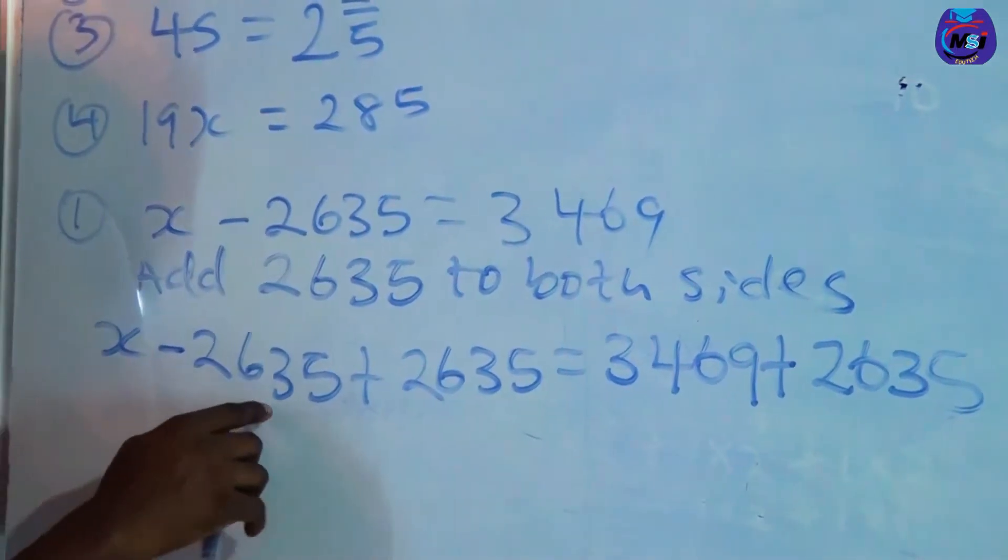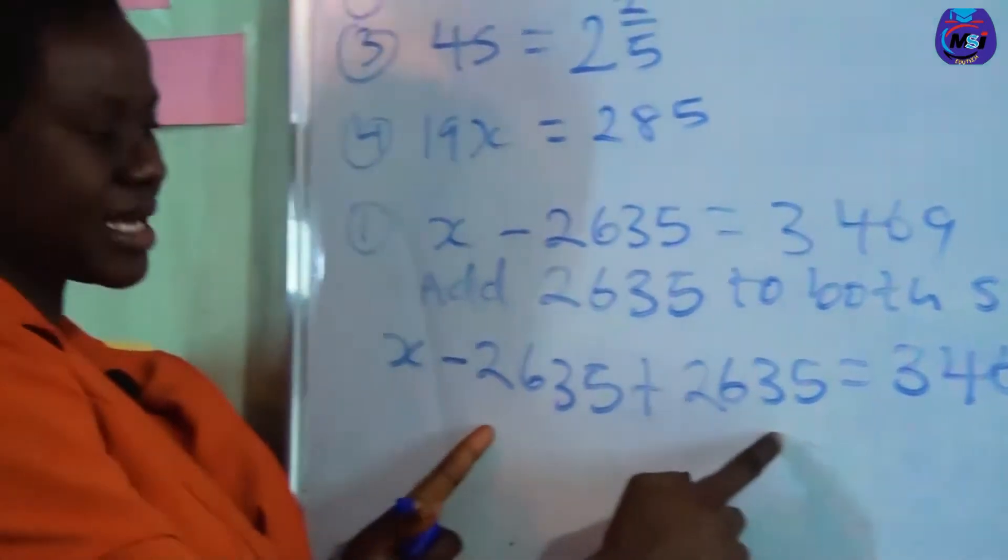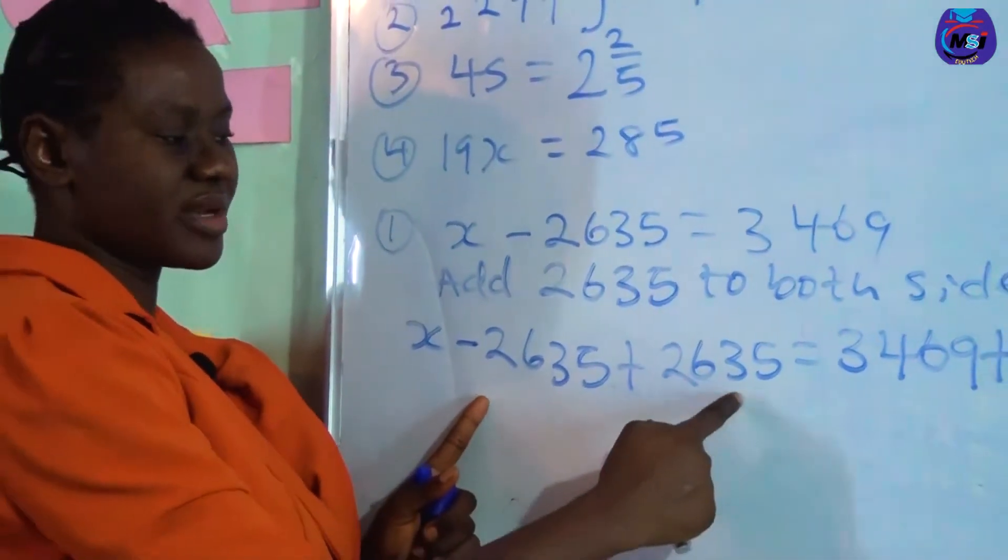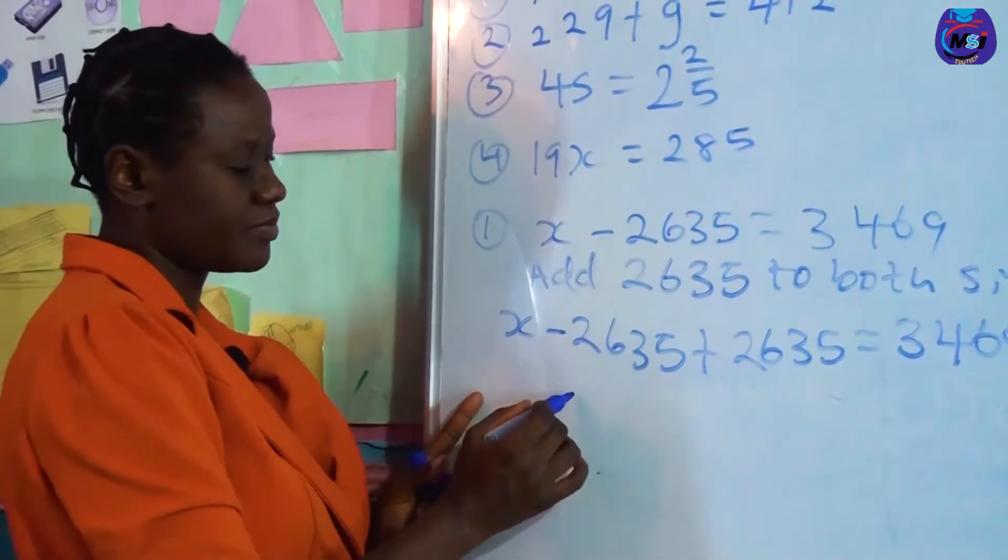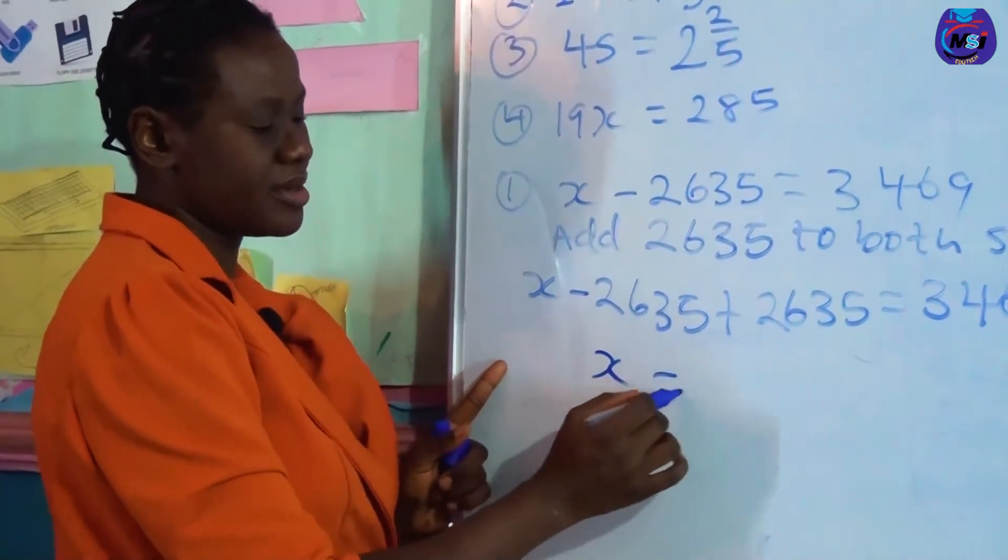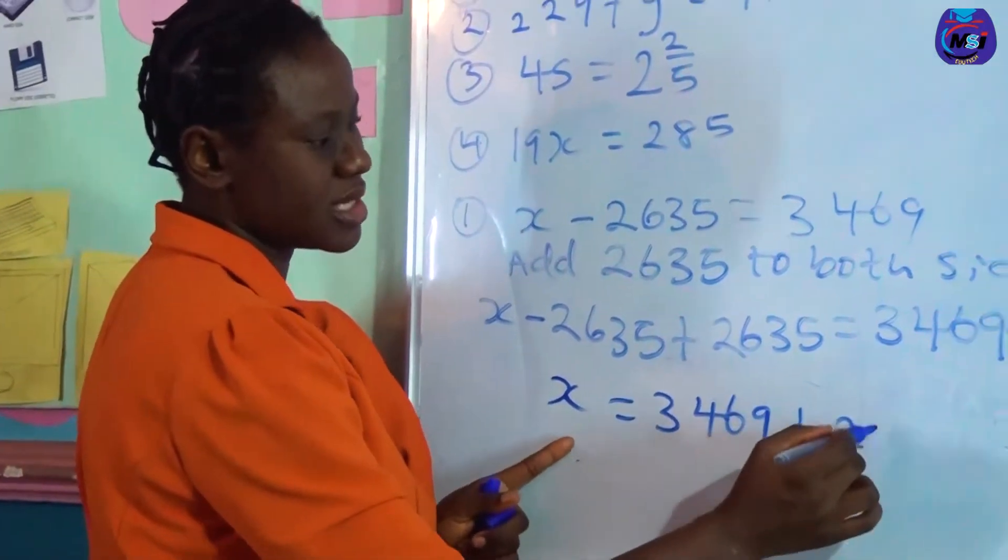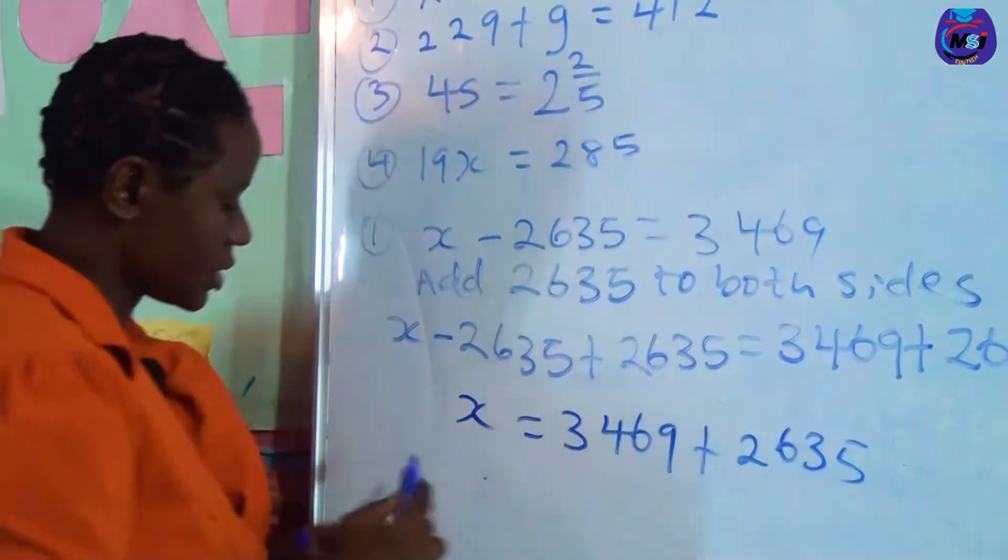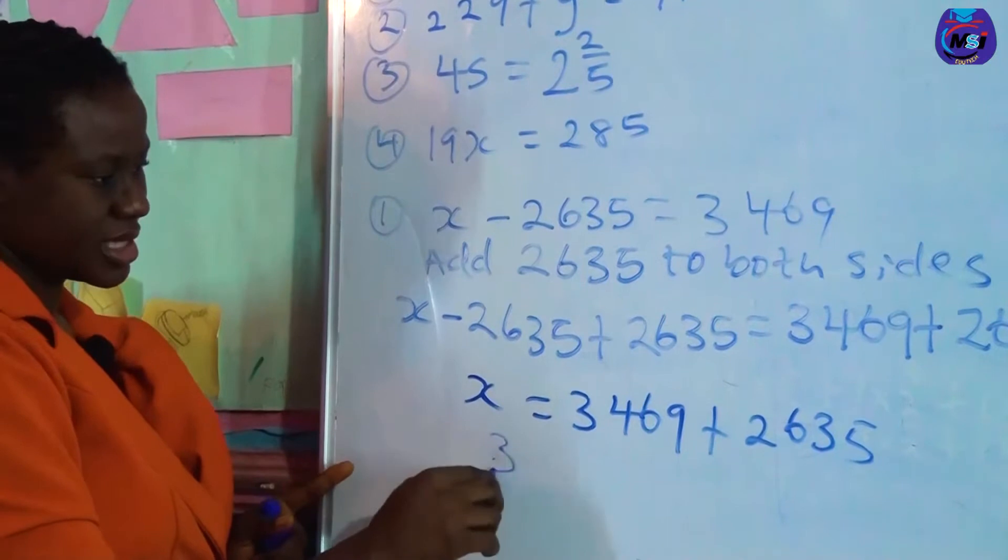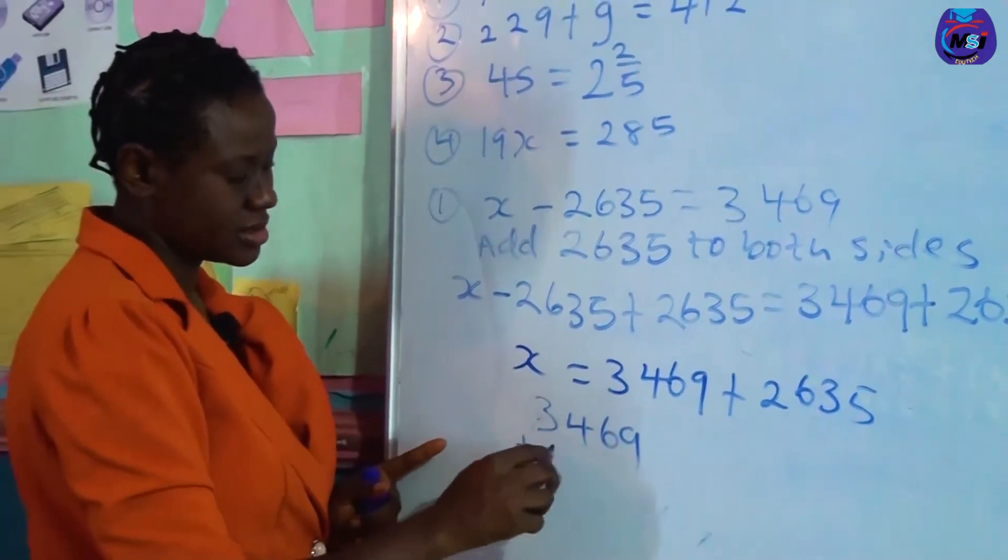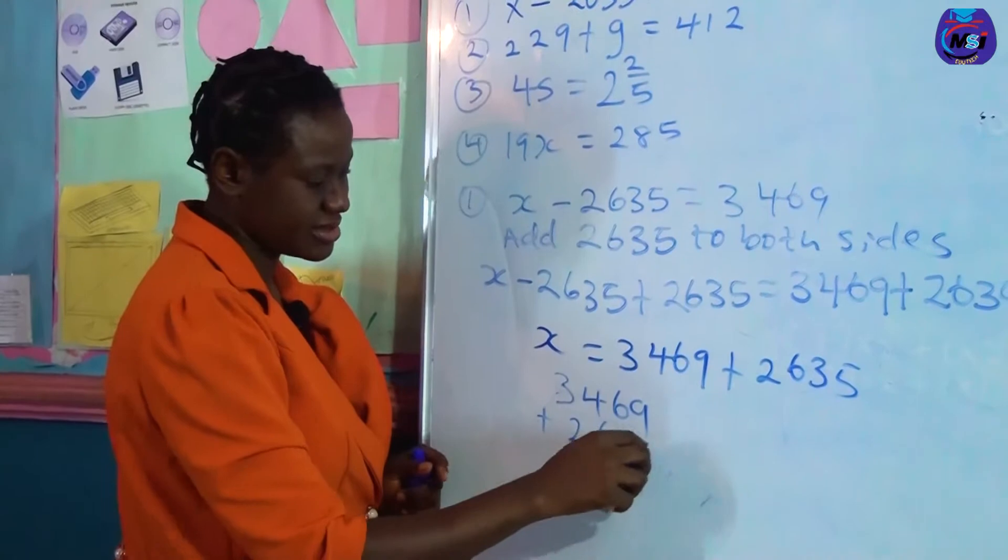Minus 2635 plus 2635 crosses out, so we are left with x. x becomes 3469 plus 2635.